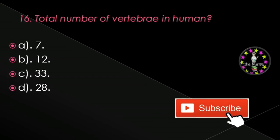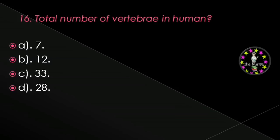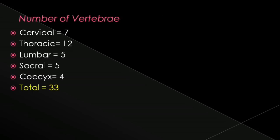Next question: Total number of vertebrae in the human body — 7, 12, 33, or 28? Correct answer is 33. Cervical: 7, thoracic: 12, lumbar: 5, sacral: 5, coccyx: 4, total: 33.